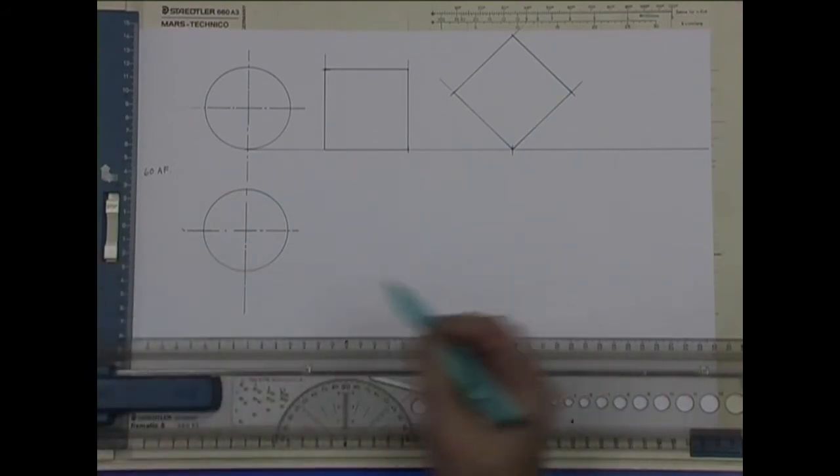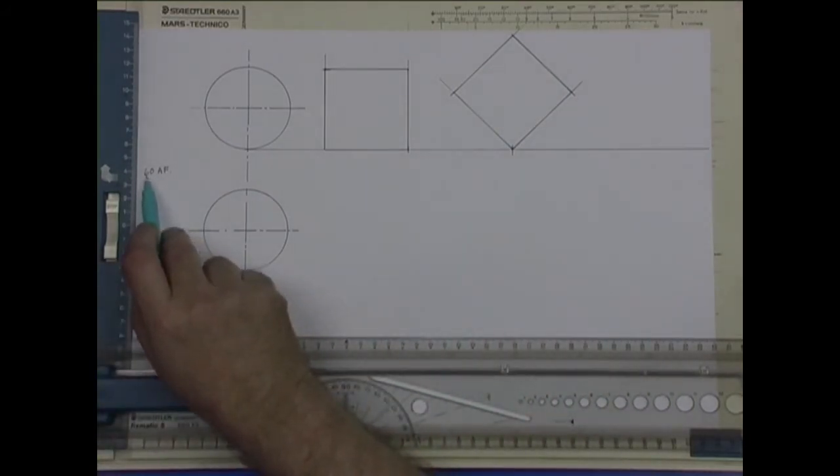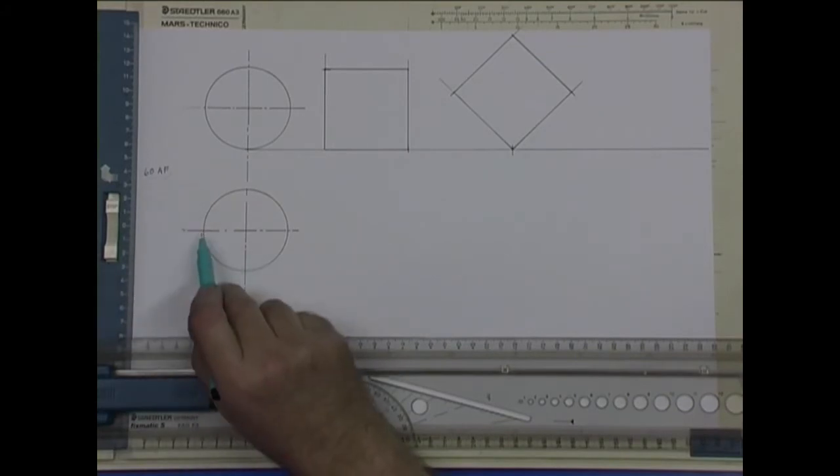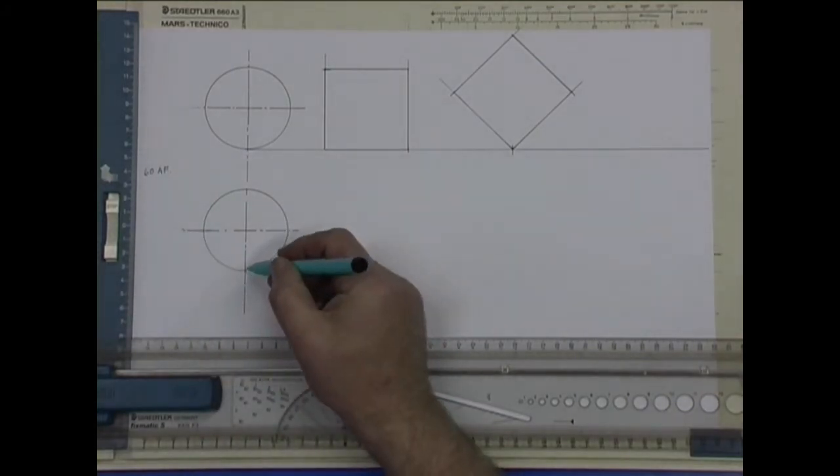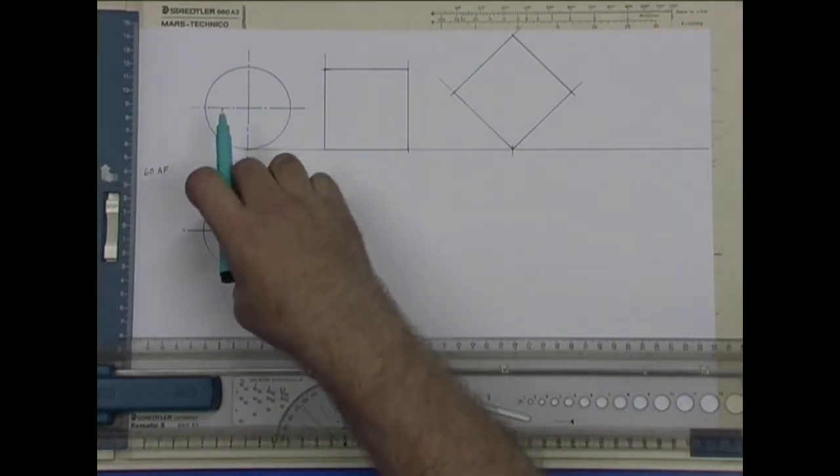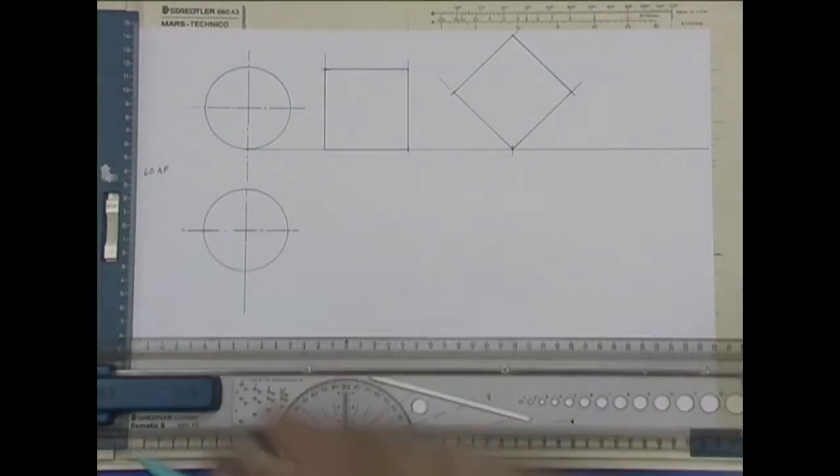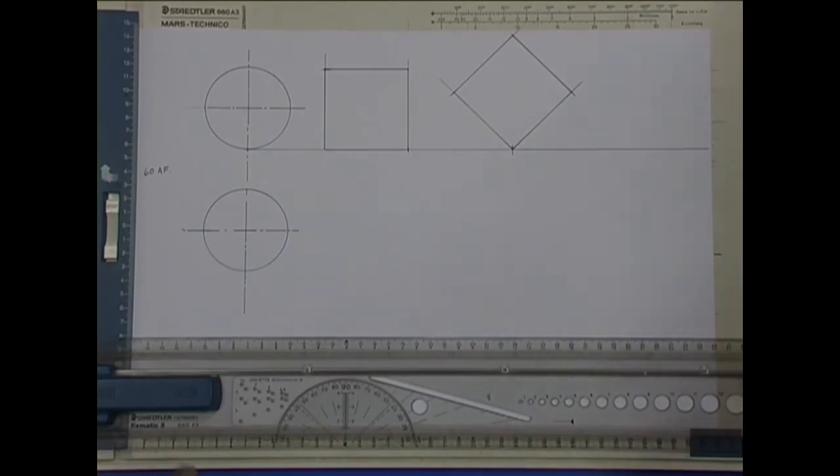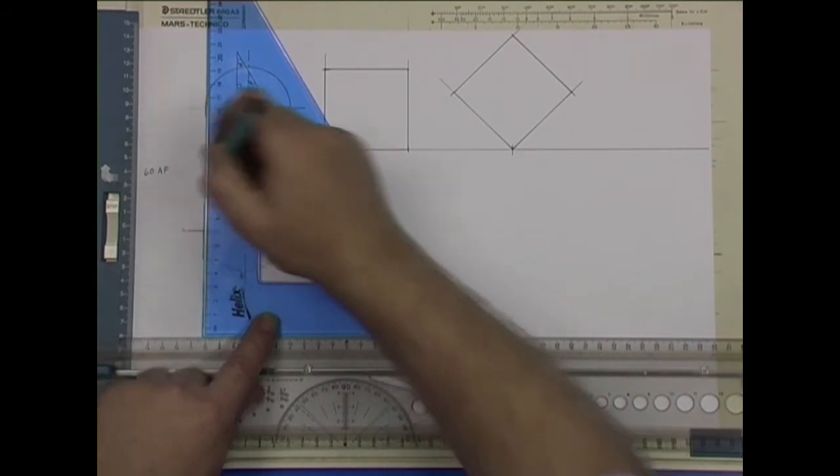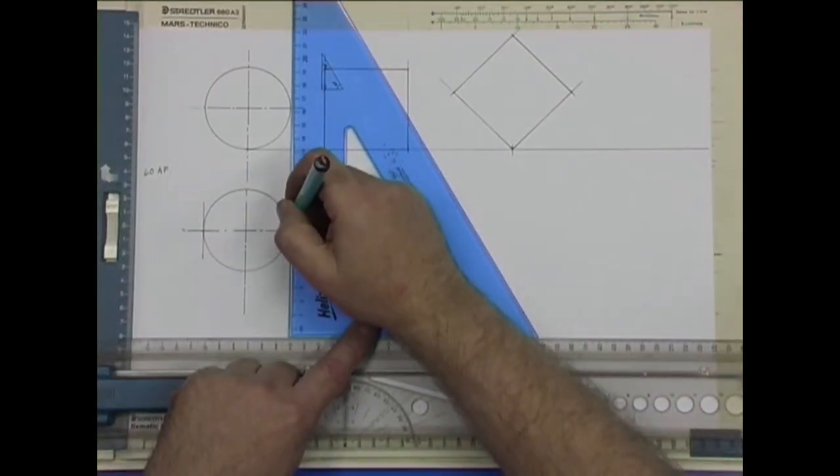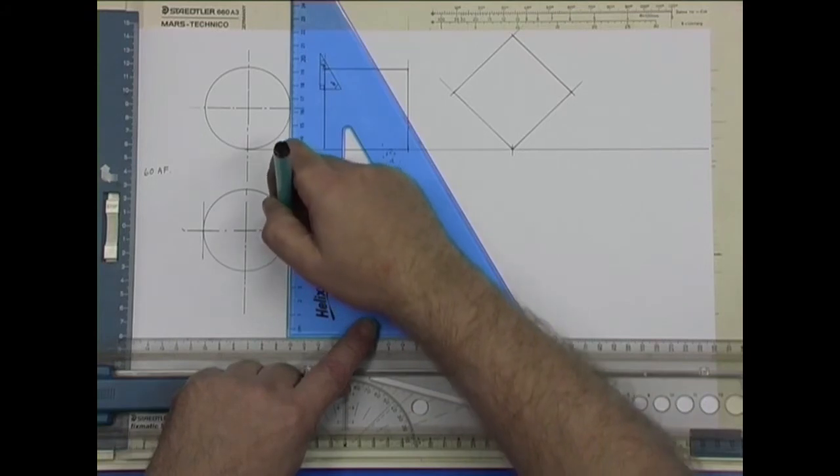And we're going to be drawing a hexagon with 60 across the flats. So the distance between there and there is 60. I could draw it that way or that way, depending on what you were asked. I'm going to draw two vertical construction lines, tangents to the edge of the circle.